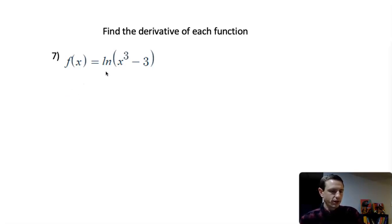Here we want to find the derivative of the natural log of x to the third minus 3. We have a function inside the natural log, so that means we're going to have to use chain rule.